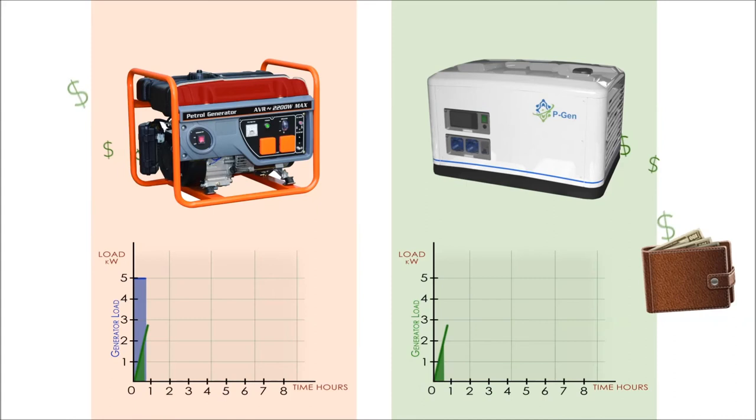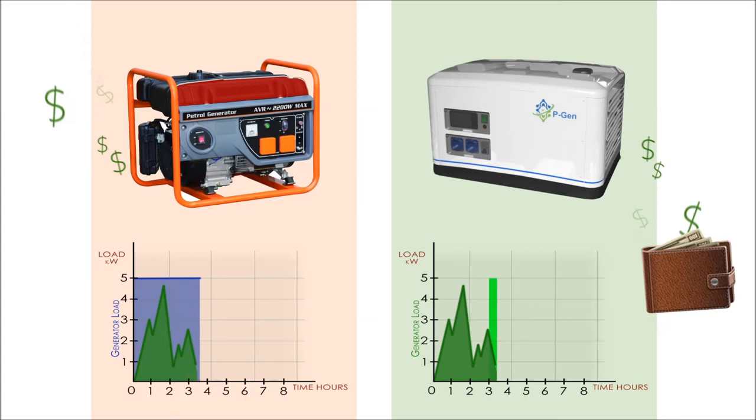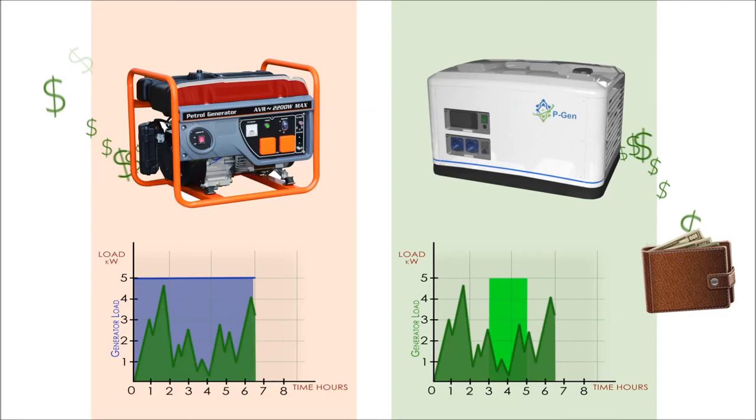PGen eliminates fuel consumption on low load, which saves up to 90% of the fuel, and still produces electricity 24-7 for household needs at the lowest possible cost.